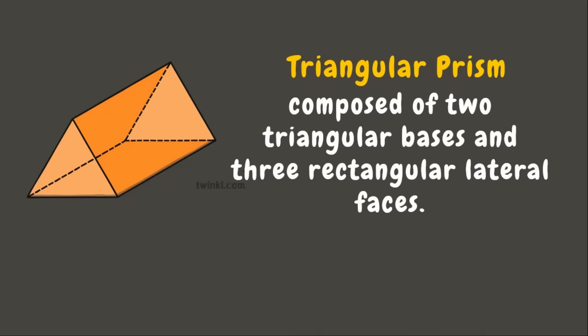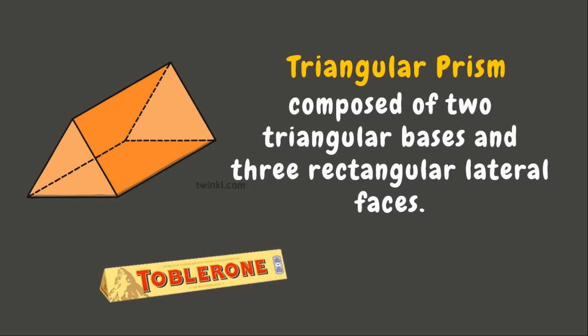Next in line, we have a triangular prism. Triangular prisms are composed of two triangular bases and three rectangular lateral faces. Examples of this are a chocolate bar, which has a triangular prism figure, and a tent.